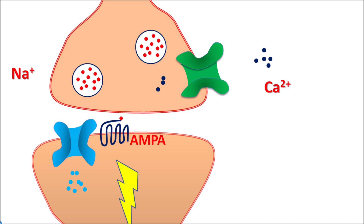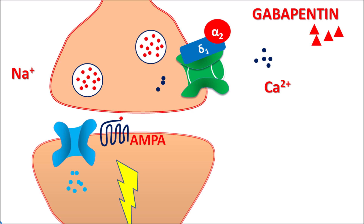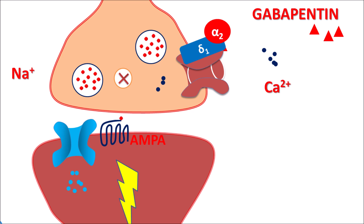In epilepsy, these neurons are repeatedly excited, resulting in asynchronous neuronal discharge leading to seizures. On the presynaptic neurons, the alpha-2-delta-1 subunit facilitates expression of calcium channel pores through which calcium can enter. Gabapentin blocks this alpha-2-delta-1 site on voltage-gated calcium channels, inhibiting calcium entry, thereby inhibiting exocytosis and postsynaptic activation — reducing neuronal activity.